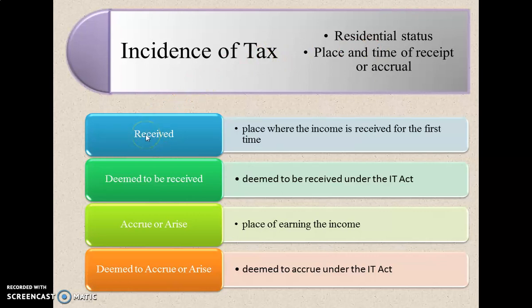Received — what do we mean when an income is received? It is the place where the income is received for the first time. For example, an employee working with an Indian IT company goes to a foreign country for an on-site opportunity and goes to the USA. While working in USA, he receives his salary there. Later, he remits that money to India to his family members. In this case, the income is received in USA — the place where the employee received the income for the first time. That is the place of receipt.